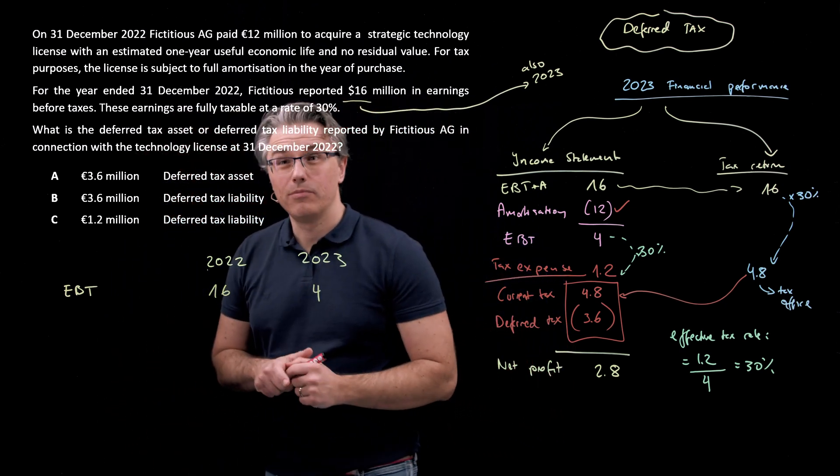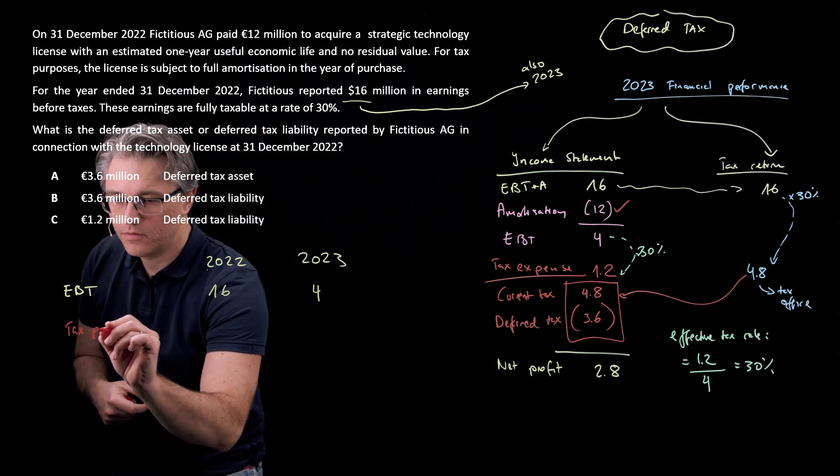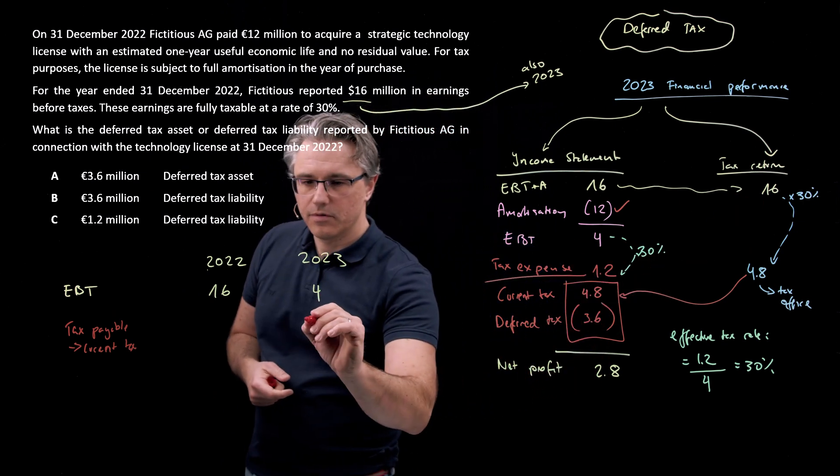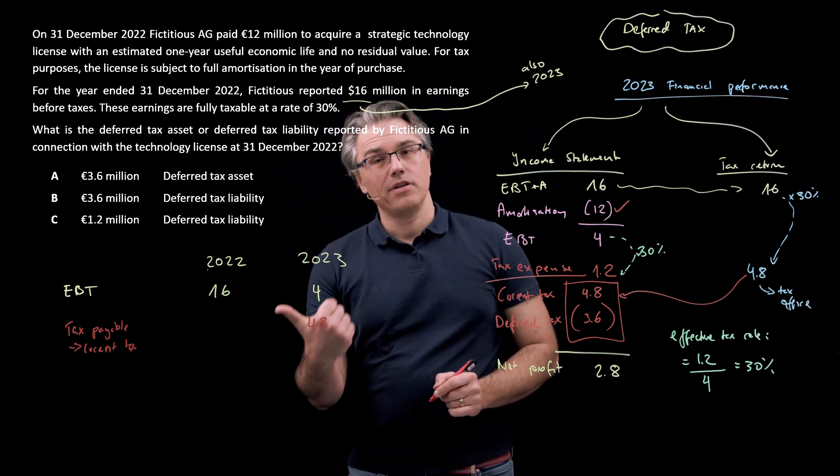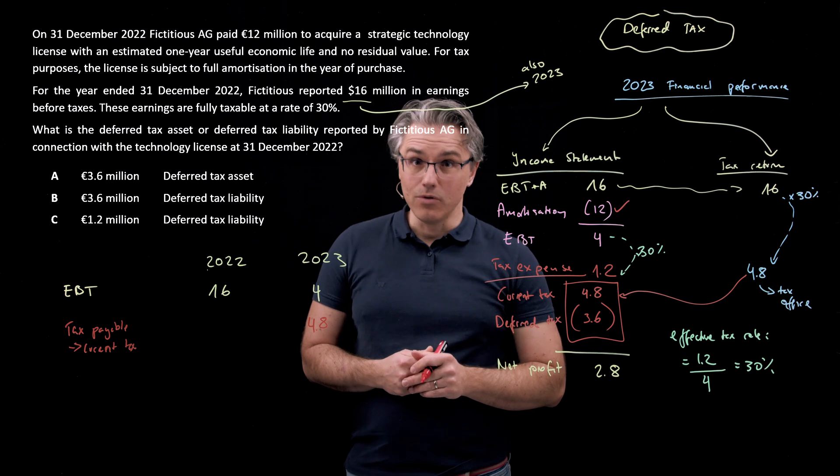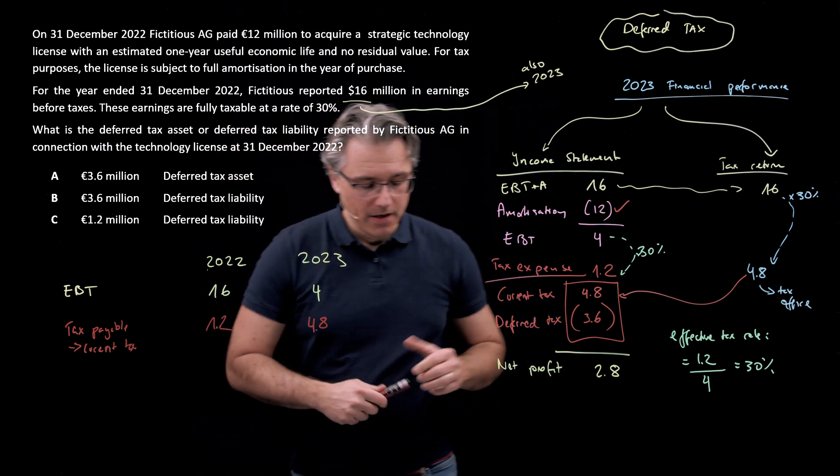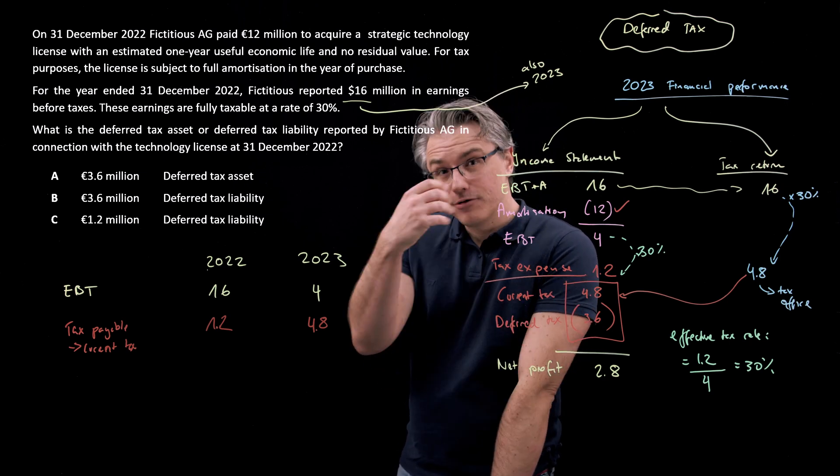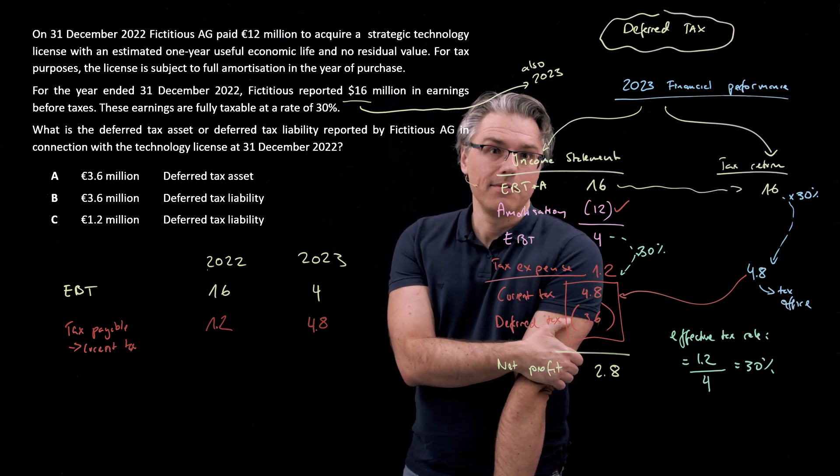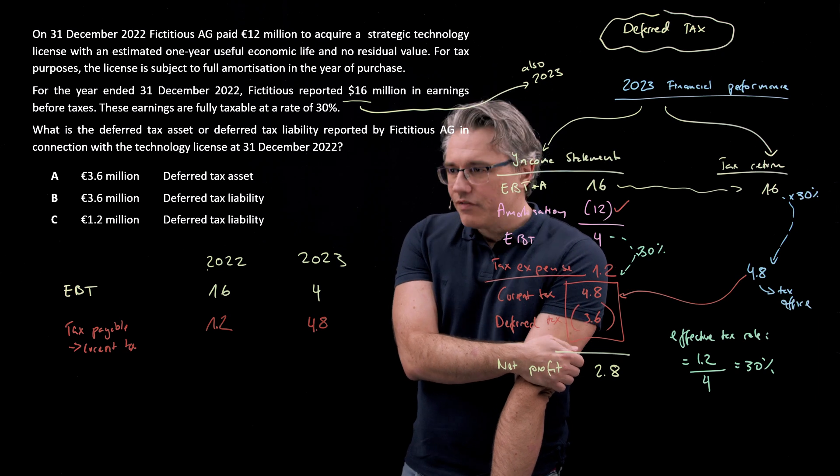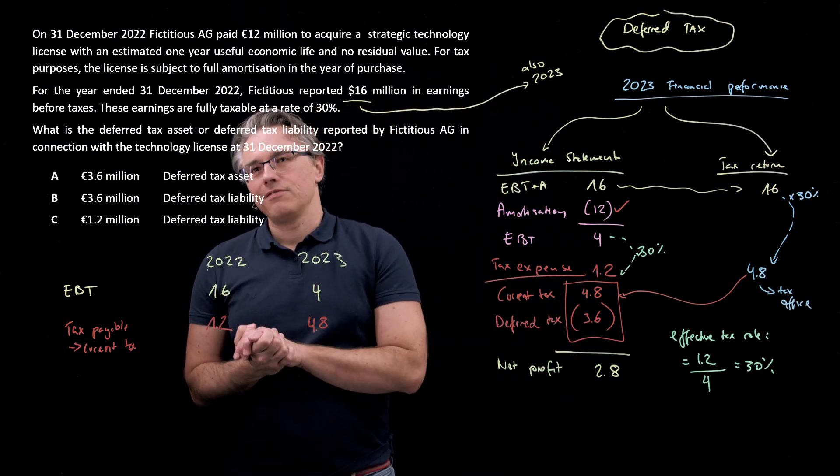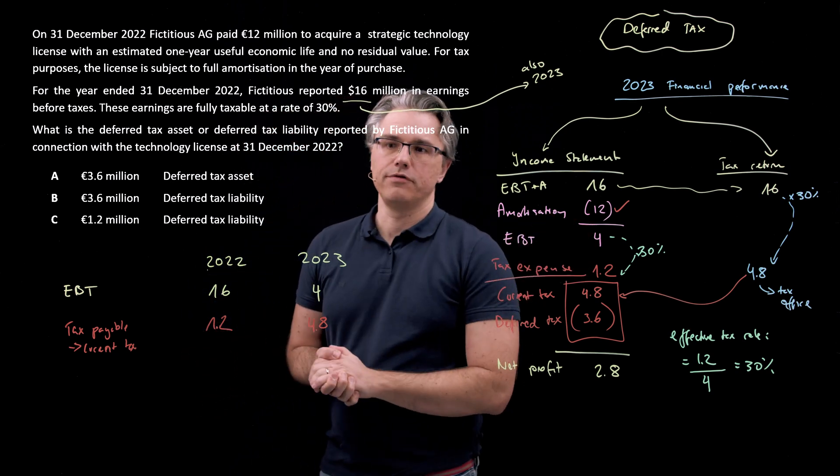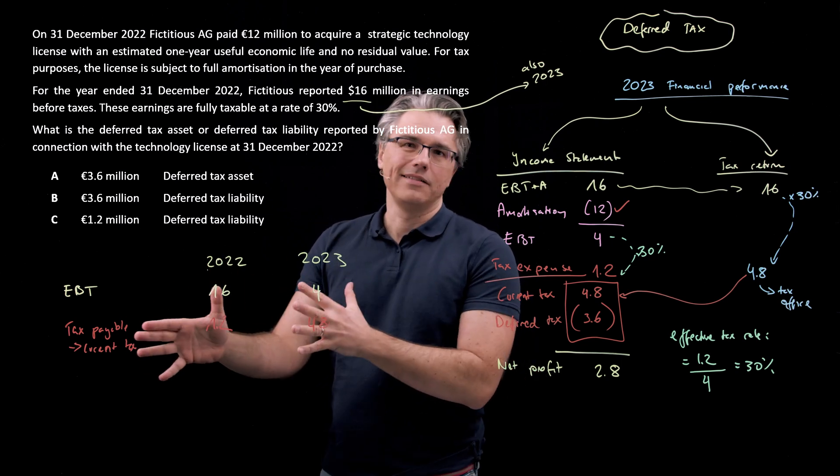However, what happened from a tax perspective was that we computed tax payable, which we also present as current tax on the basis of what happens in the tax return. And over here, tax payable is a very big 4.8, whereas in the previous year, it was a relatively small 1.2. Now, it was 1.2 in 2022 because we could make a deduction for the purchase of a license in the year of its purchase. And that caused tax to be quite low, the tax expense or the tax payable to be quite low because of that tax saving. However, this approach to computing tax doesn't really go in line. It doesn't really match, from a timing perspective, how we recognize amortization and therefore earnings before tax in our income statement.